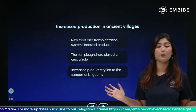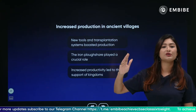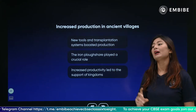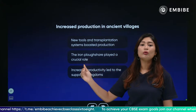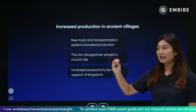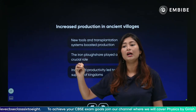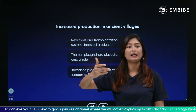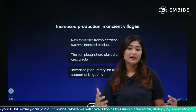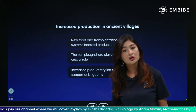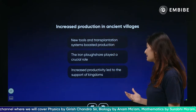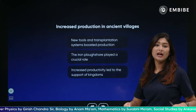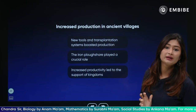With iron coming into the picture, agriculture boomed — people started experimenting, growing multiple things at a larger scale and at an advanced level. The iron ploughshare played a very important role. Naturally, when all this production and growth was happening, it also led to the establishment of settlements. Communities started forming, which ultimately led to the formation of a leader in these settlements and the formation of kingdoms.